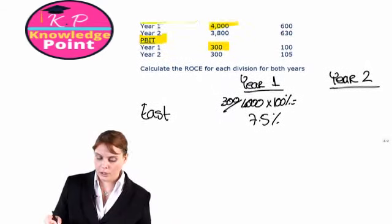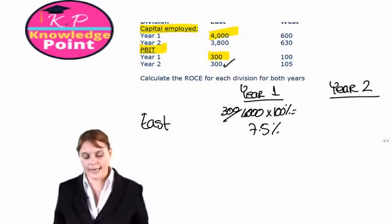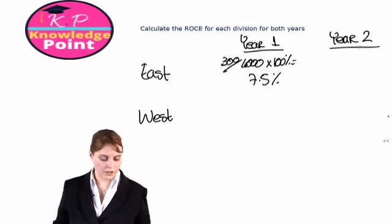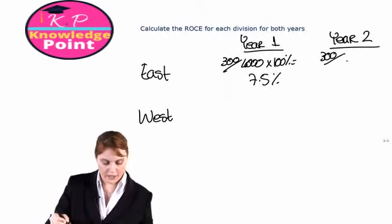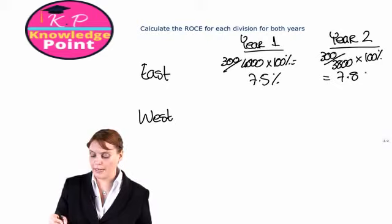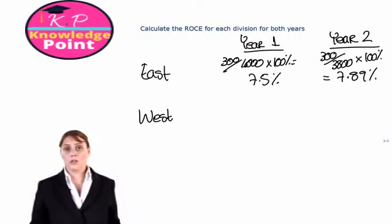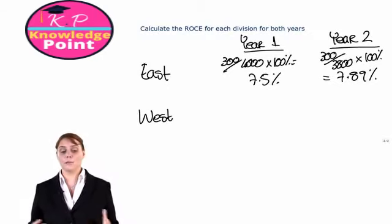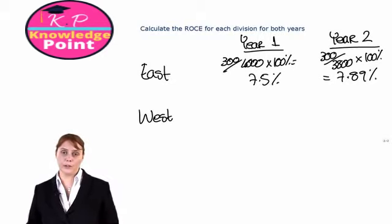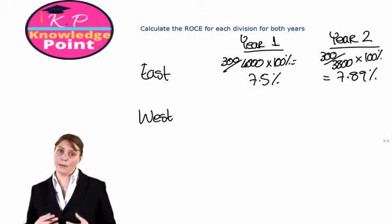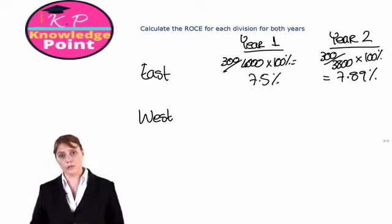Looking at year two, we see that their profit stays the same and their capital employed has gone down. So calculating our return on capital employed, 300 divided by 3,800 multiplied by 100%, you should get 7.89%. So what can we say about division East? We can say that their performance has improved over year one to year two. Even though their profit figure has stayed the same, they have reduced the amount of capital or investment they need in order to run the business.